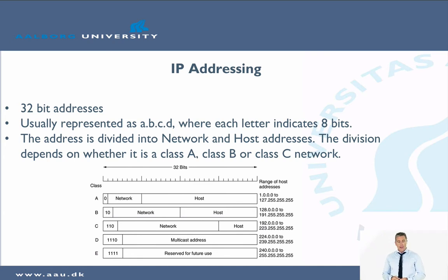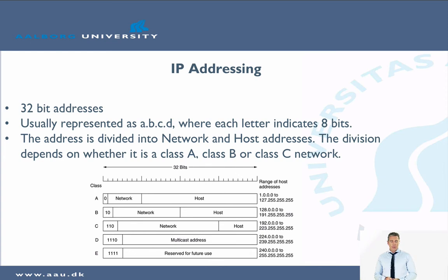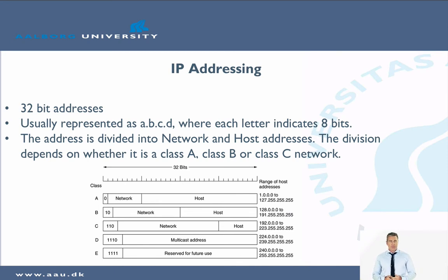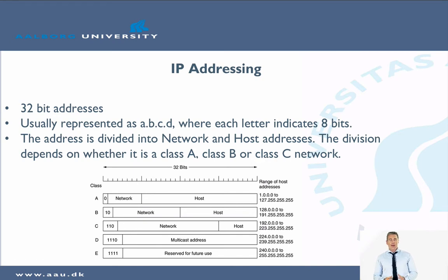As you can see in the figure, if it is a class A network then you have only a few networks but each can have a lot of hosts. If you have a class B network then you have a larger number of networks but a smaller number of hosts. And if you have a class C network then you have the largest number of networks and the smallest number of hosts. This division was made traditionally to accommodate that every organization could have its own network, and depending on how many people were in the organization it would have networks of different sizes.